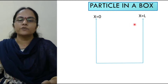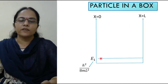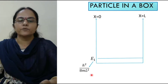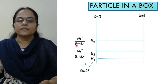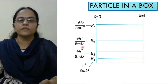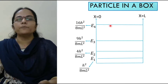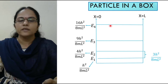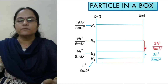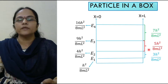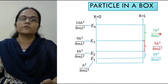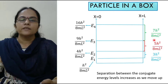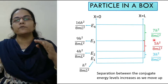Here x equals 0 and x equals L mark the boundaries of the box. E1 is at h² by 8mL², E2 is at 4h² by 8mL², E3 is at 9h² by 8mL², and E4 is at 16h² by 8mL². As we move up, the separation between two consecutive energy levels increases.